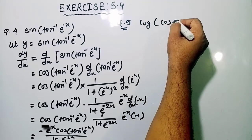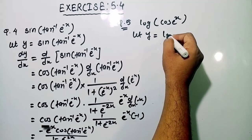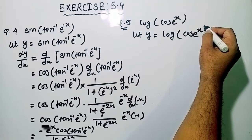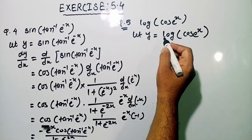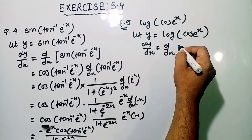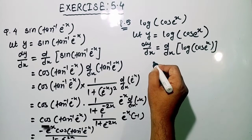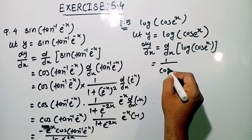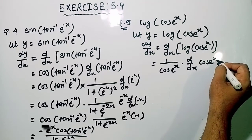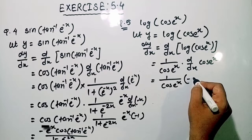The next question: differentiate log cos e raised to the power x. So y is equal to log cos e raised to the power x. Now differentiating with respect to x on both sides, so dy by dx of log cos e raised to the power x. Using the chain rule, differentiation of log gives 1 upon cos e raised to the power x, now differentiation of cos e raised to the power x.